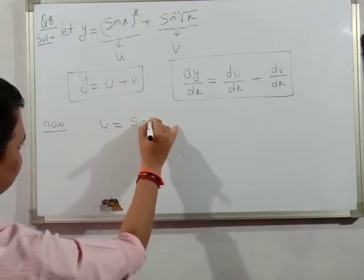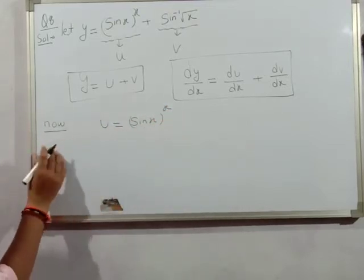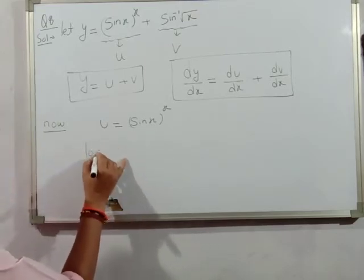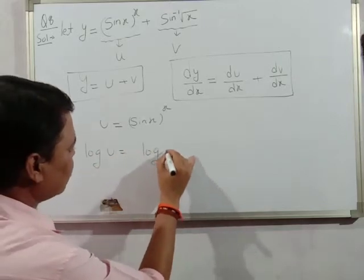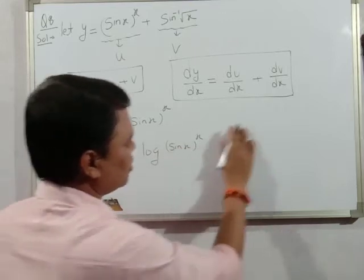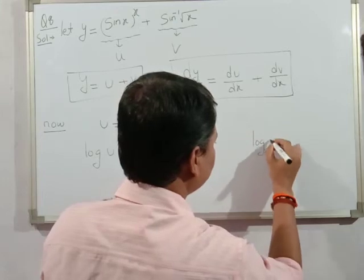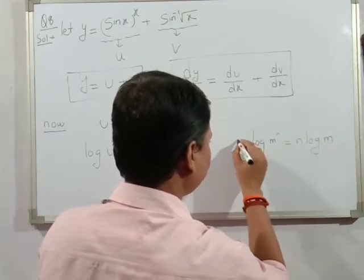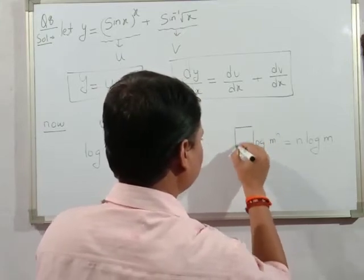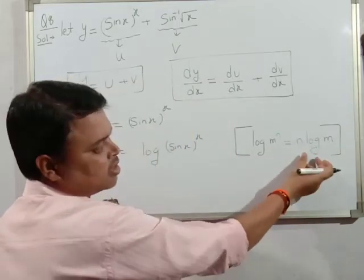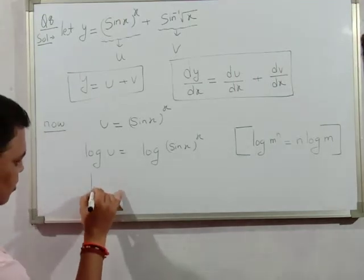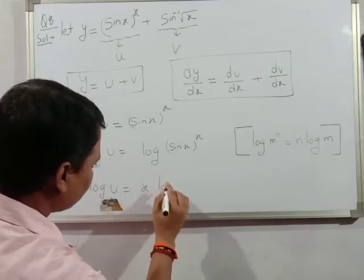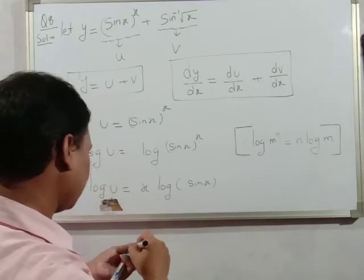u equals sin(x) to the power x. Taking log on both sides: log u equals log of sin(x) to the power x. Using the property of log — m to the power n equals n log m — so log u equals x times log(sin x).